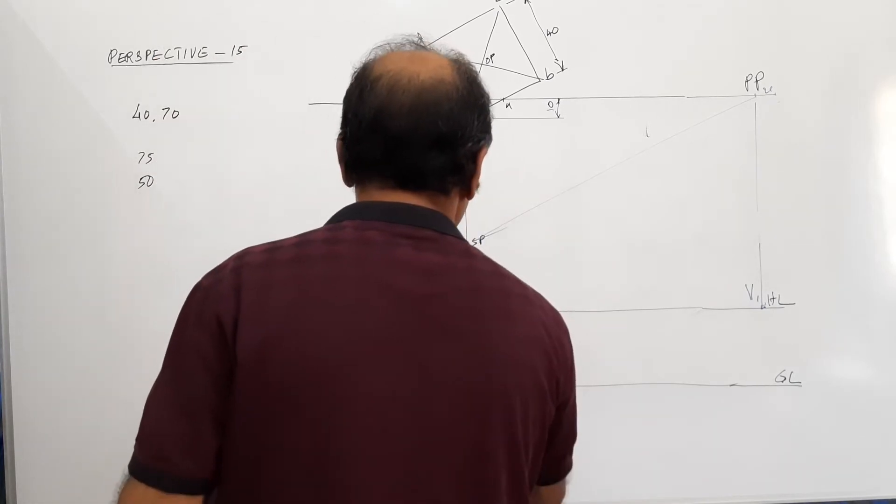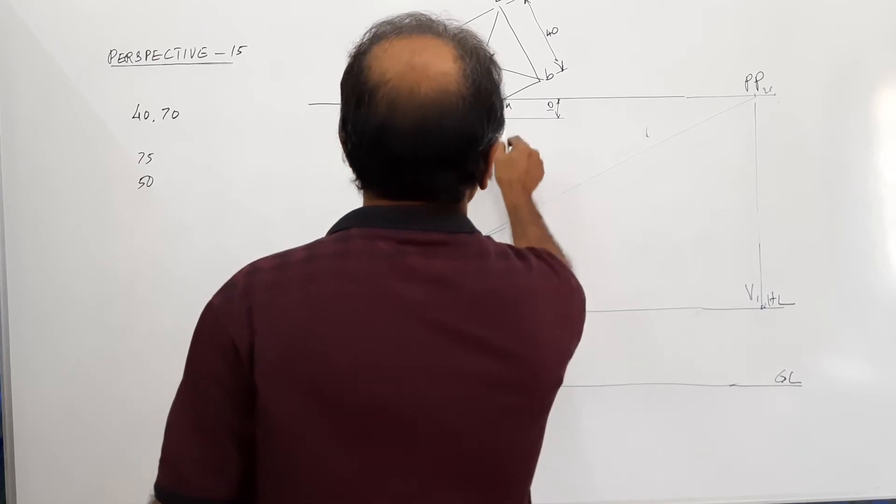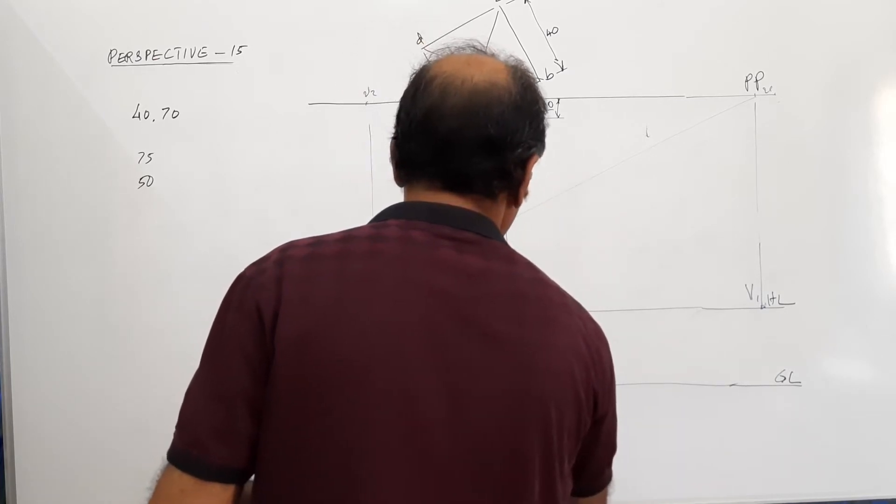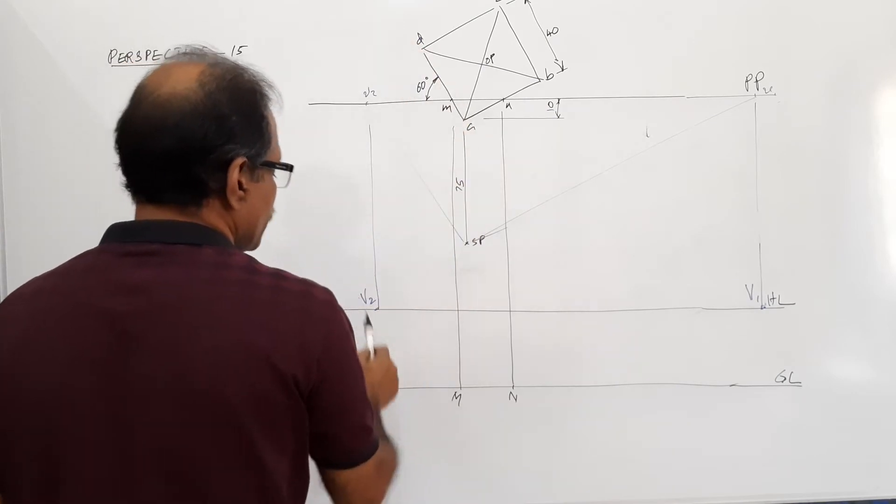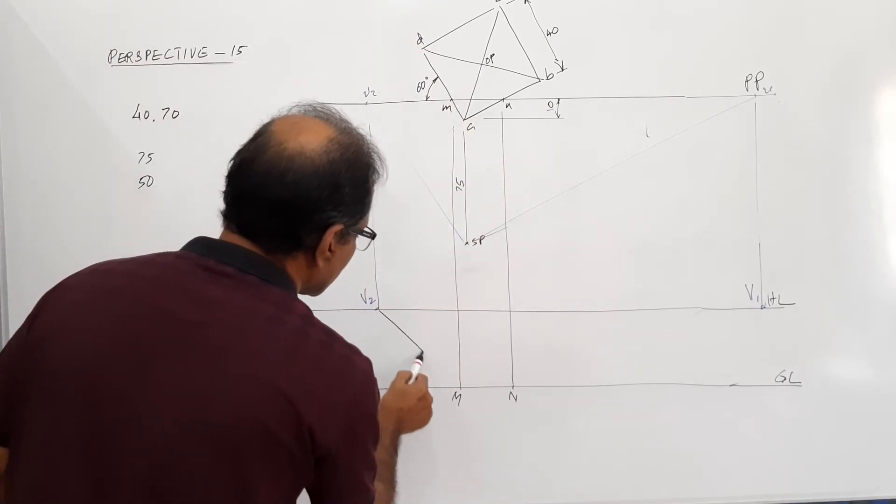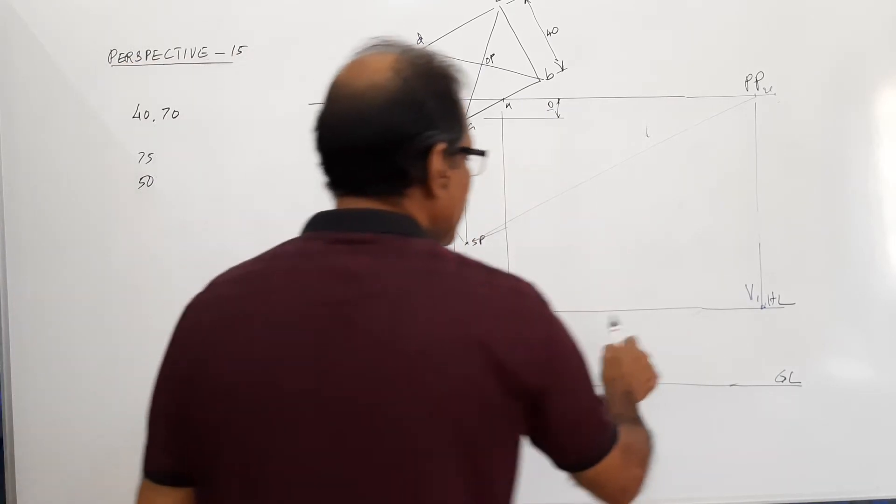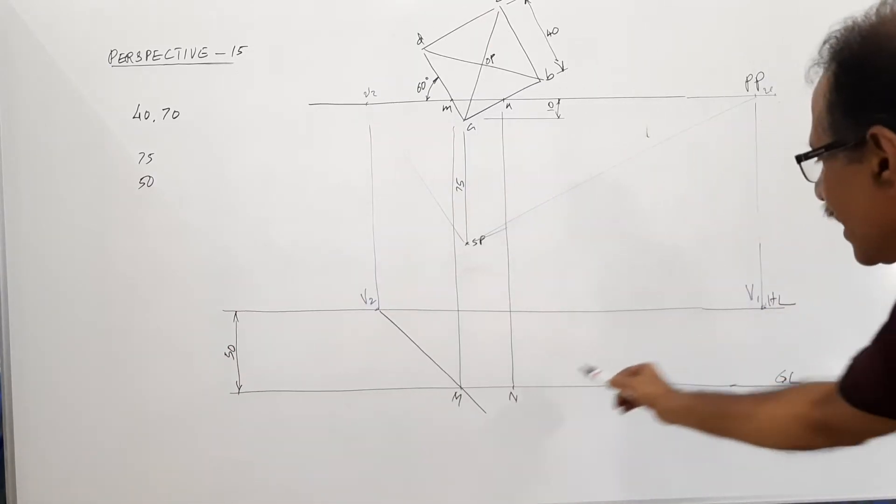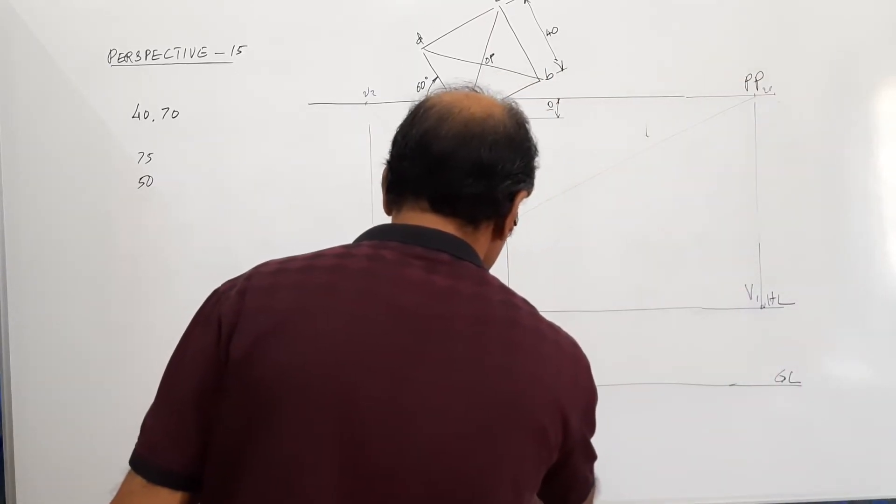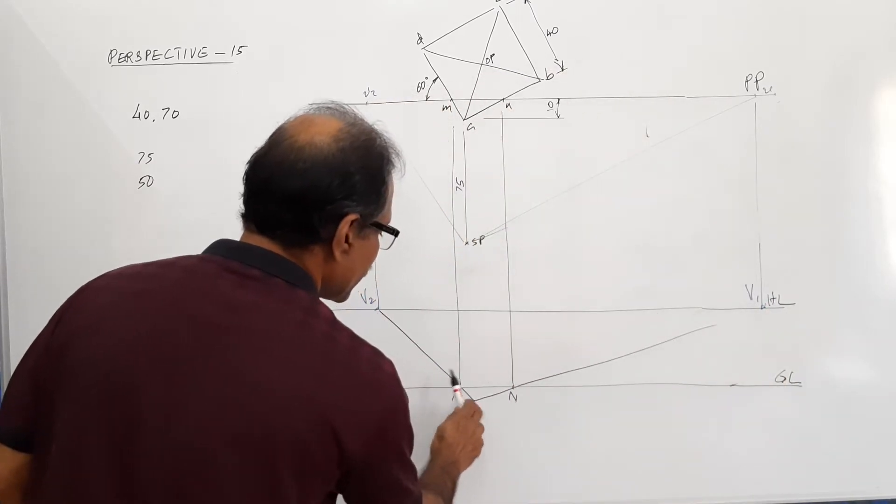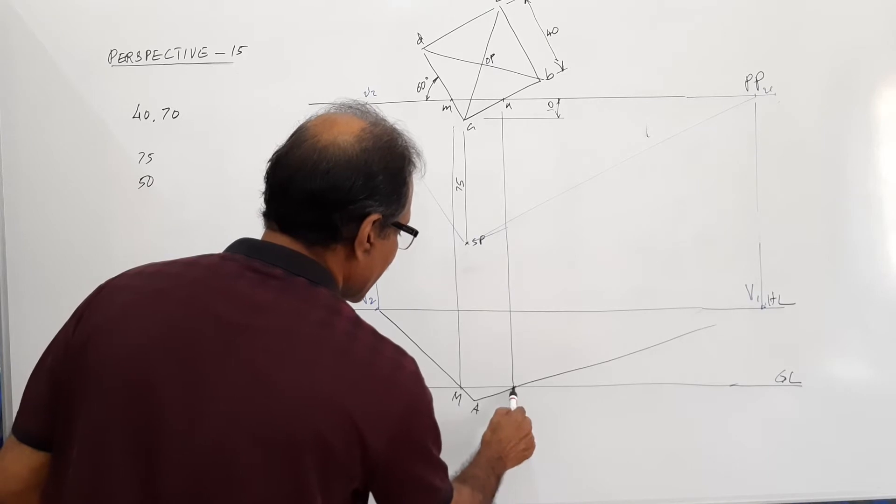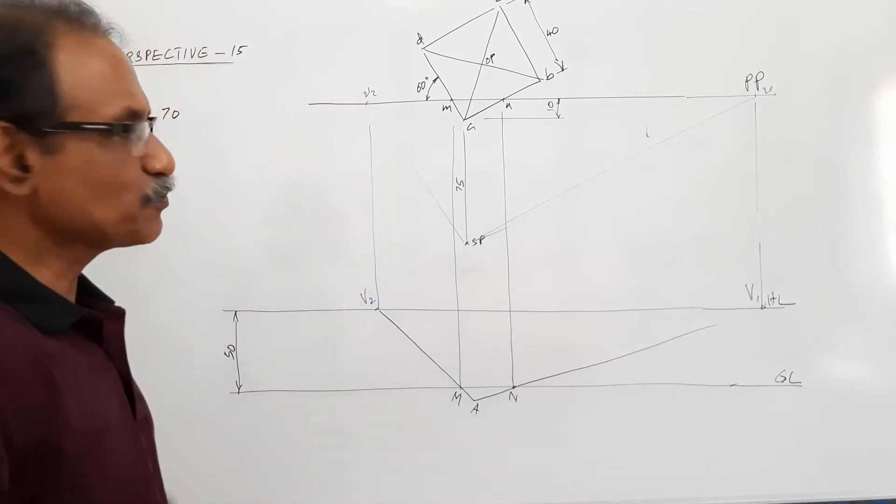So drop M down, capital M. Drop N down, capital N. This side has got this vanishing point. So join V2 to M and extend. Join V1 to N and extend. What do you get? You get point called A. This is point A.